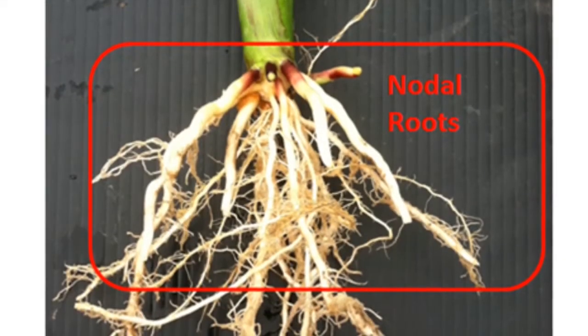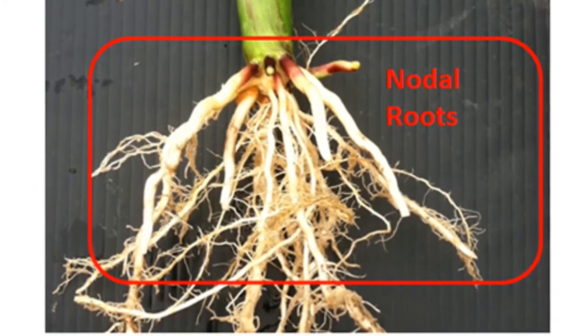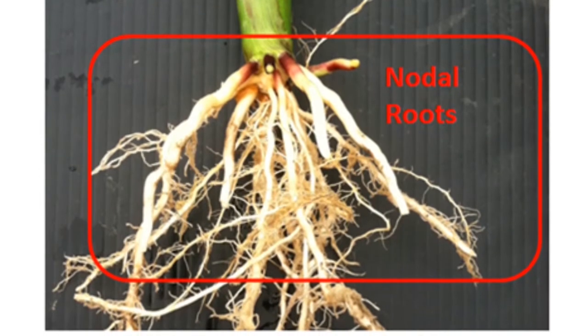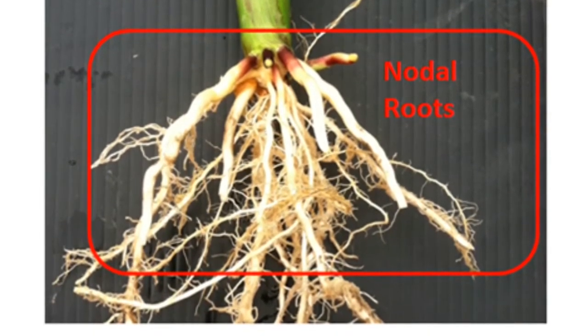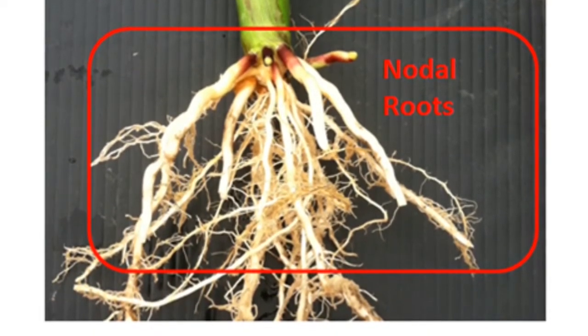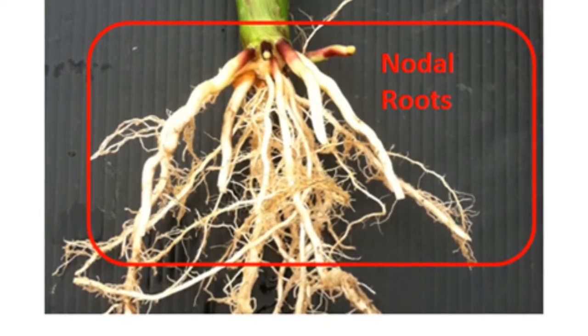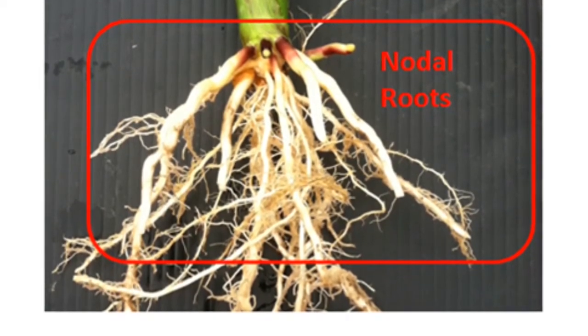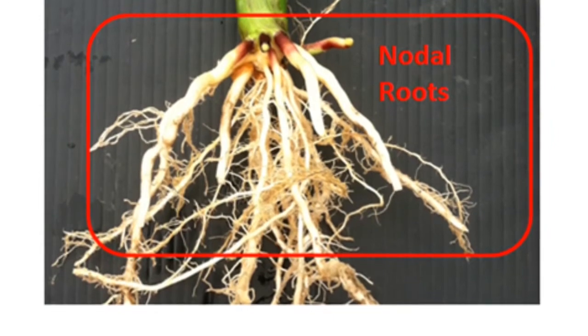By V1, the nodal root system begins to develop at the crown of the plant, usually about three-quarters of an inch below the soil surface. By V3, the nodal root system begins to take a more prominent role in water and nutrient uptake, and by V6, it has completely taken over this function as well as the function of anchoring the plant within the soil.